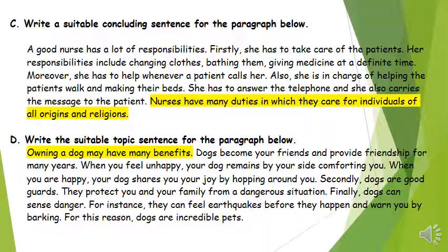Exercise D is the last exercise: write the suitable topic sentence for the paragraph below. 'Dogs become your friends and provide companionship for many years. When you feel unhappy, your dog remains by your side comforting you. When you are happy, your dog shares your joy by hopping around. Secondly, dogs are good guards — they protect you and your family from dangerous situations. Finally, dogs can sense danger; for instance, they can feel earthquakes before they happen and warn you by barking.' This paragraph talks about the benefits of having a dog. So we can write as a topic sentence: 'Owning a dog has many different benefits.' And that was everything concerning the worksheet. Thank you for watching.